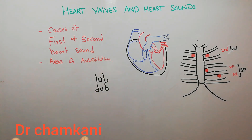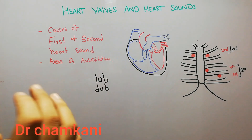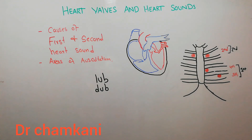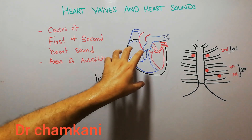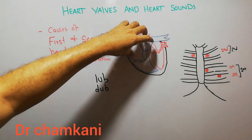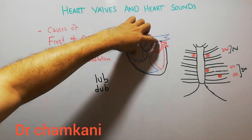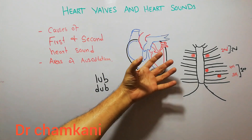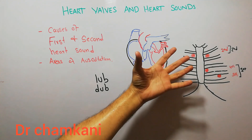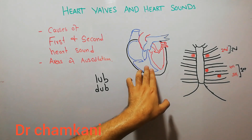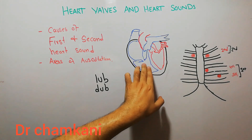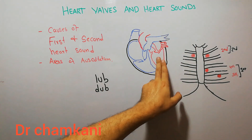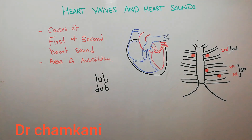As the heart pumps, both atria contract simultaneously. Similarly, both ventricles contract simultaneously. When blood is pumped from both atria into the ventricles, the ventricles pump blood — the right ventricle sends blood into the lungs and the left ventricle sends blood into the body.